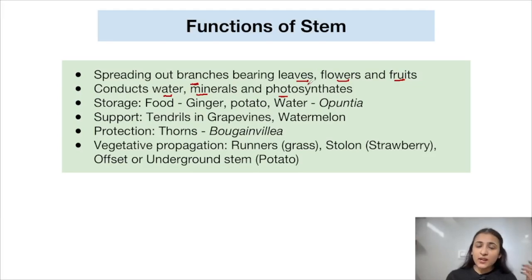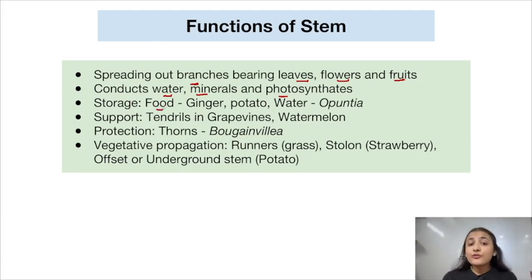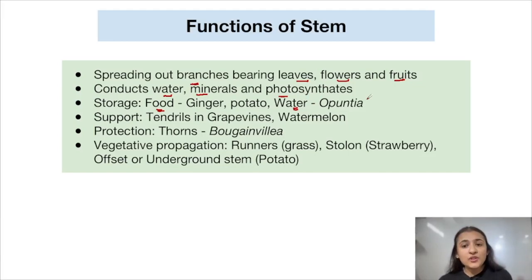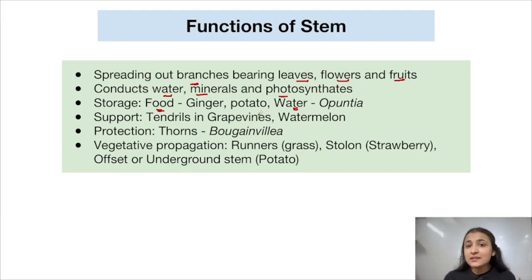The stem contains vascular tissues, which are the conducting tissues responsible for transport. The stem is also responsible for storage of food and water. Food is stored in stems of plants like ginger and potato. Water is stored in the stem of Opuntia. These functions are seen in stems that have modified themselves to perform these special functions.